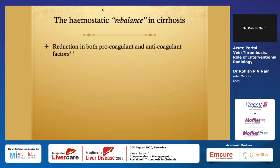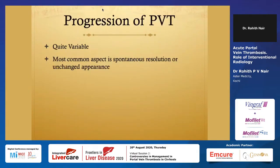What we know is there is a rebalance of hemostasis in cirrhotics. There is a reduction of both pro-coagulant and anti-coagulant factors, and these are the biggest things we need to know to assess whether what we are going to do is going to work or not.